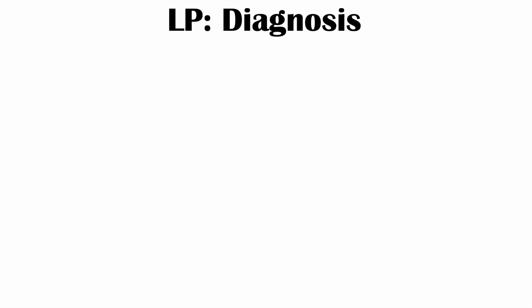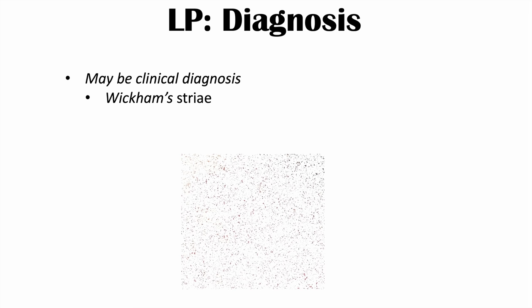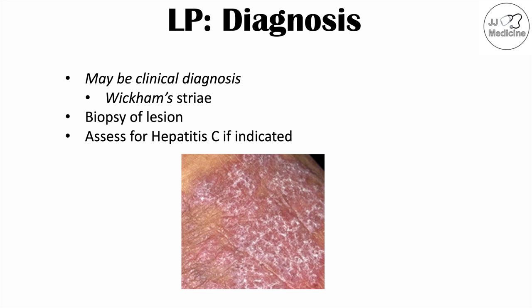This condition may be diagnosed clinically — for instance, if Wickham's striae is observed, that is pathognomonic. Often, a biopsy of the lesion can be helpful in confirming the diagnosis. If there are particular risk factors or a suspicion of hepatitis C association, it is also important to assess for hepatitis C infection.